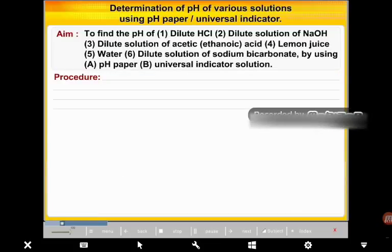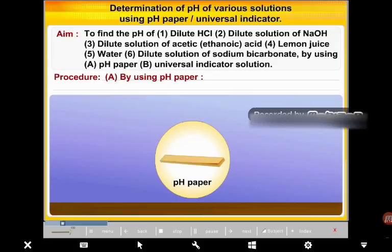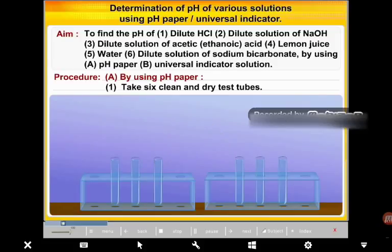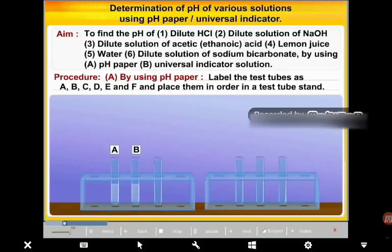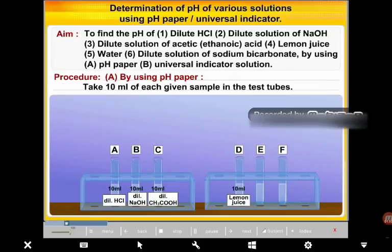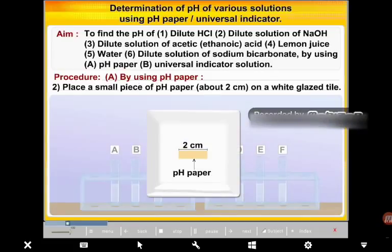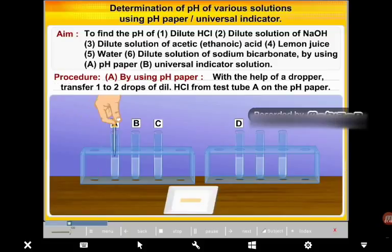Procedure A: By using pH paper. Step 1: Take 6 clean and dry test tubes. Label the test tubes as A, B, C, D, E, and F, and place them in order in a test tube stand. Step 2: Take 10 ml of each given sample in the respective test tubes. Step 3: Place a small piece of pH paper (about 2 cm) on a white tile. With the help of a dropper, transfer 1 to 2 drops of dilute HCl from test tube A onto the pH paper.